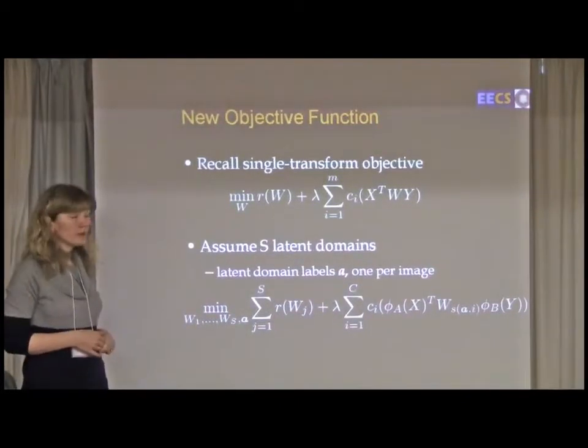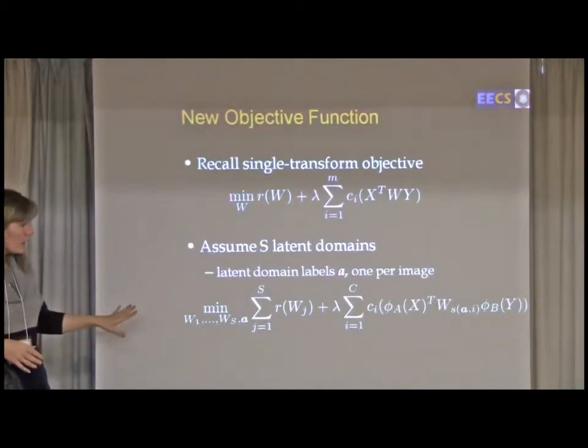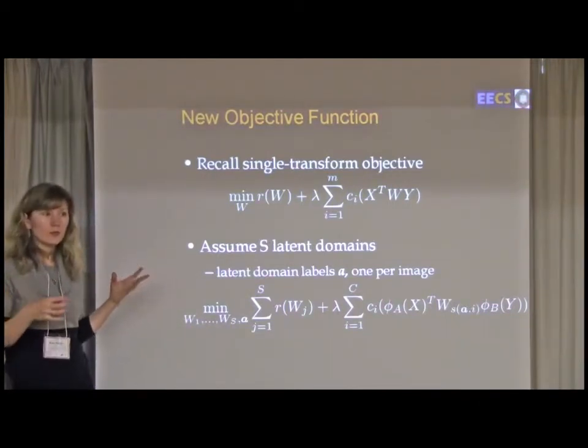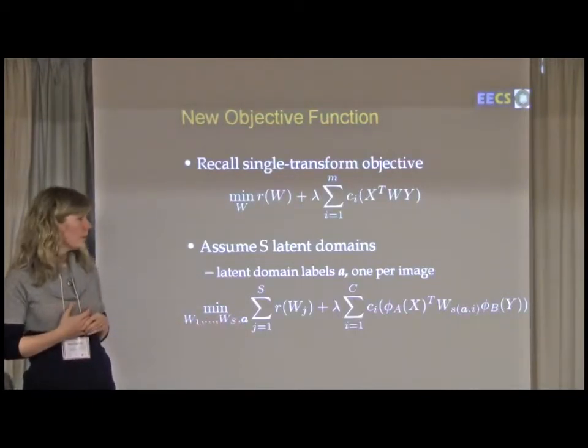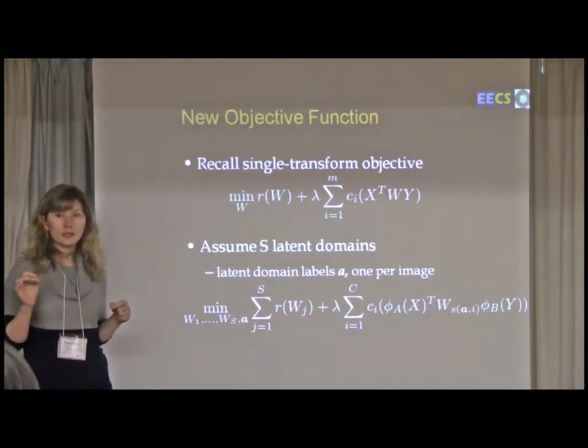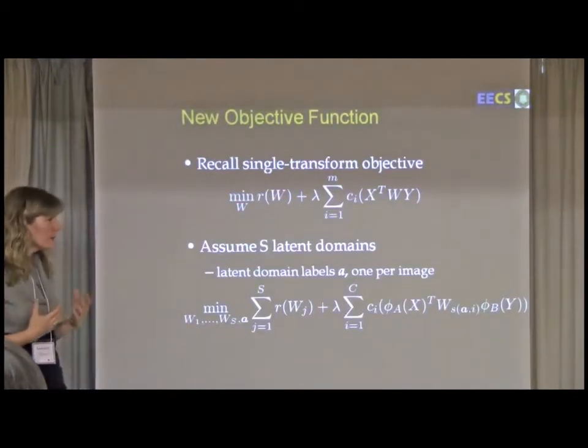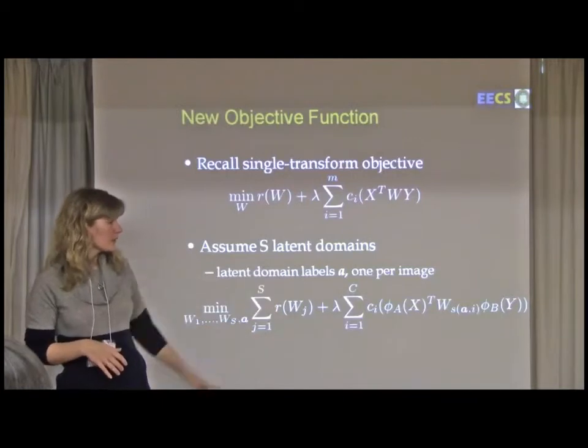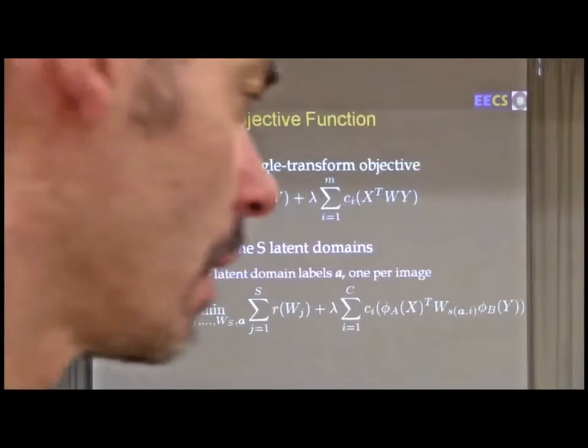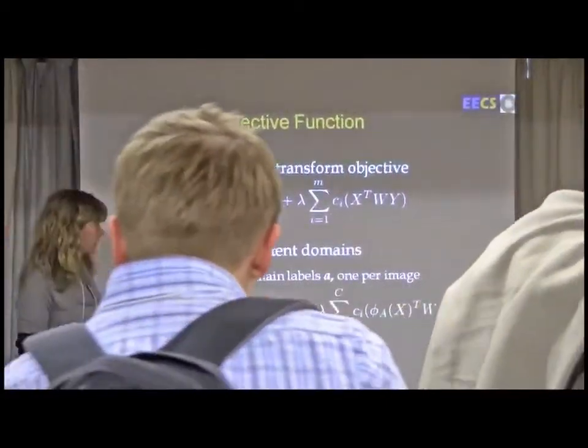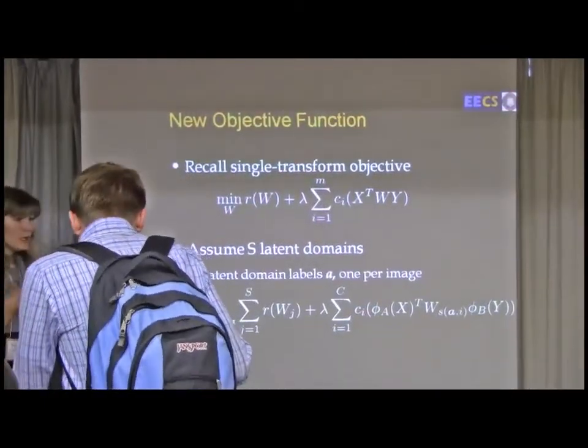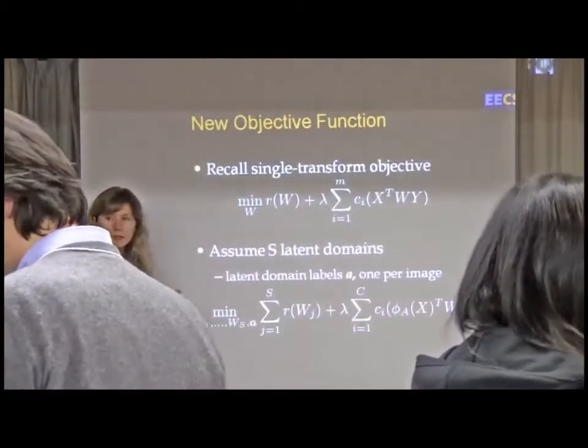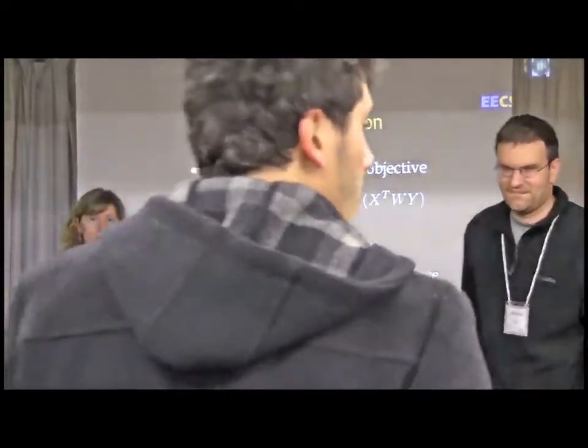So this is a very hard problem. This was our previous objective function. Now we're going to introduce some number of latent domains, so S latent domains. So now we're optimizing over a set of Ws, one W per latent domain, plus this vector of domain labels A, where there's one label per image that says which latent domain that image belongs to. So now we want to regularize a set of Ws, and we want to minimize the loss as before, except now the loss is parameterized by this A. So we're actually going to iterate between solving each set of problems. First we're going to find the A variables, so the latent domain labels, and then we're going to fix them and solve for the Ws.